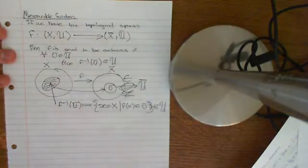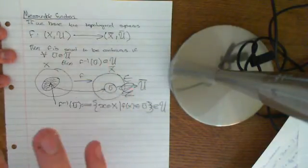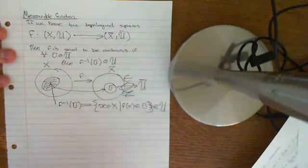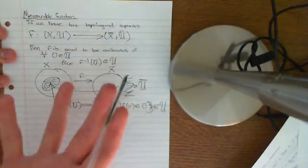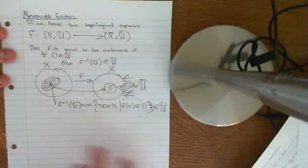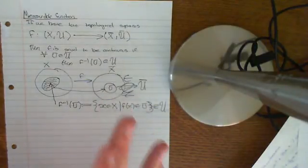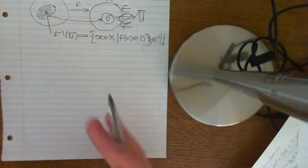That is the definition of continuity amongst topological spaces. It's an abstract definition, but of course it's motivated from being able to draw a function, a graph, without taking your pen off the paper. It's not instantly apparent that that is the same as the other definition, but you derive this from something closer to your intuition, and it all comes together beautifully. This concept is very important in geometry and topology.